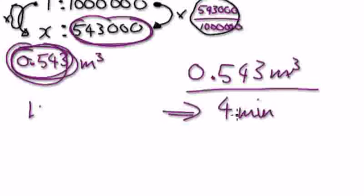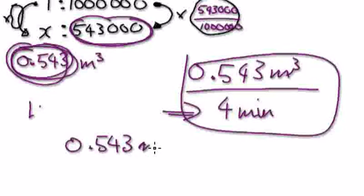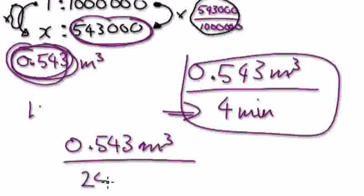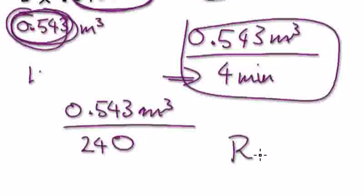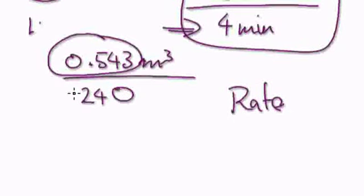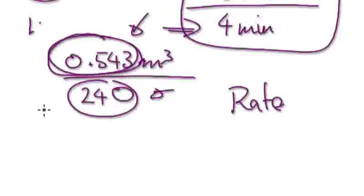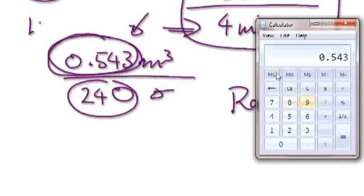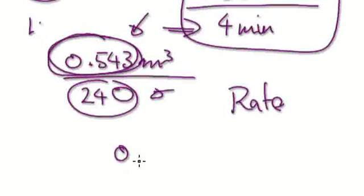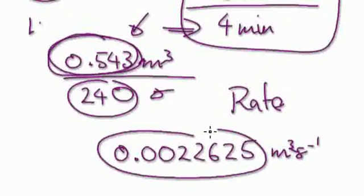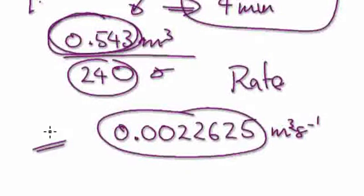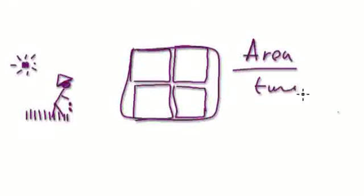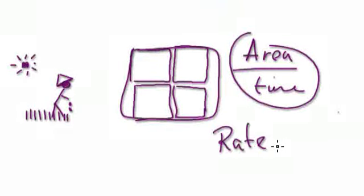So: three thousand centimeters cubed in four minutes — convert this into meters cubed per second. In one second, how many meters cubed? Convert this unit into this unit. Press pause and have a go.